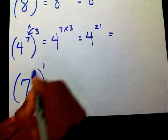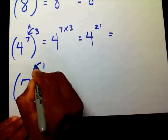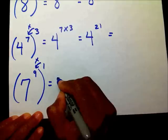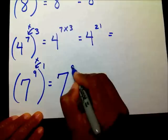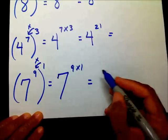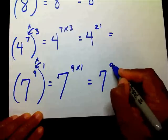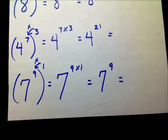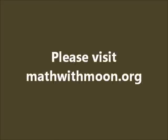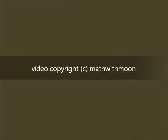The last one: seven to the ninth raised to the first power. Multiply your exponents — that gives you seven raised to the nine times one. But what is nine times one? Seven to the ninth power. That's all for the power to a power rule. If you have any suggestions or comments, please email me at mathwithmoon at gmail.com. I'll see you next time.